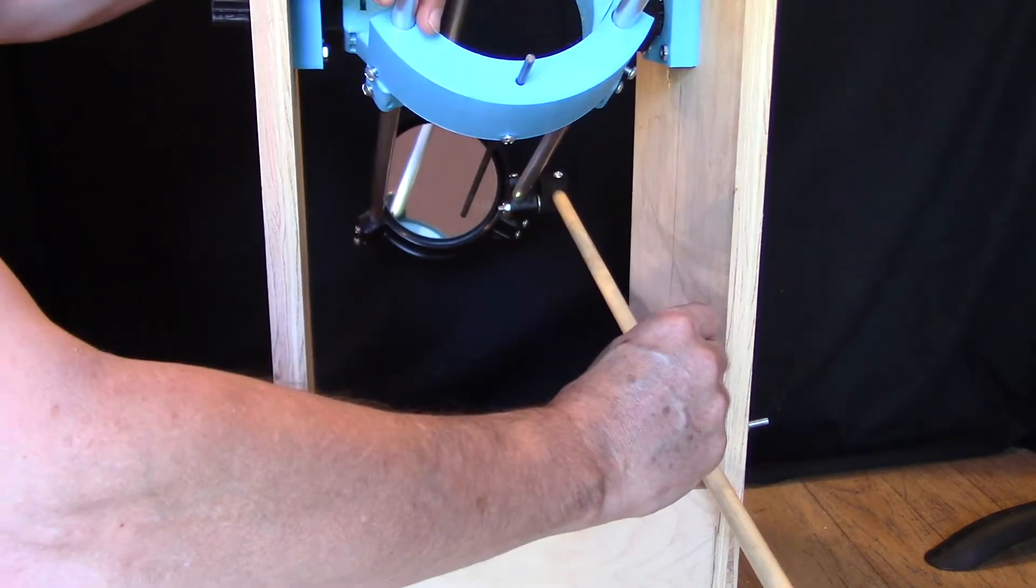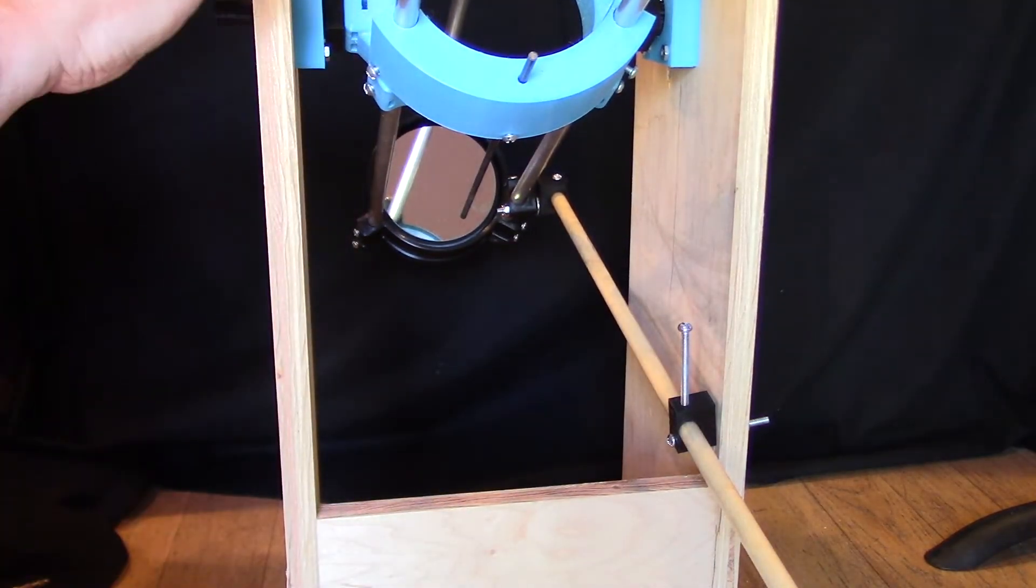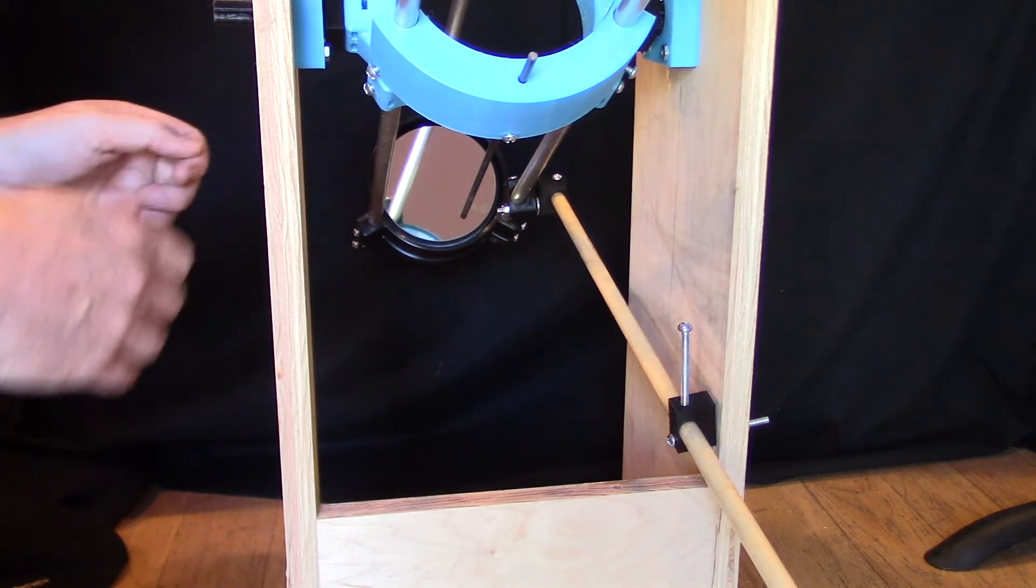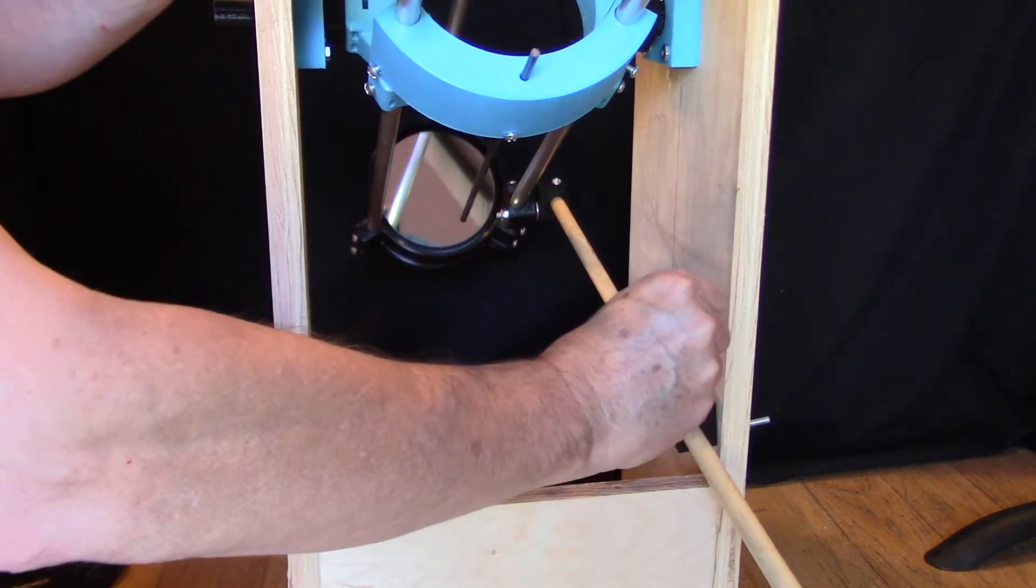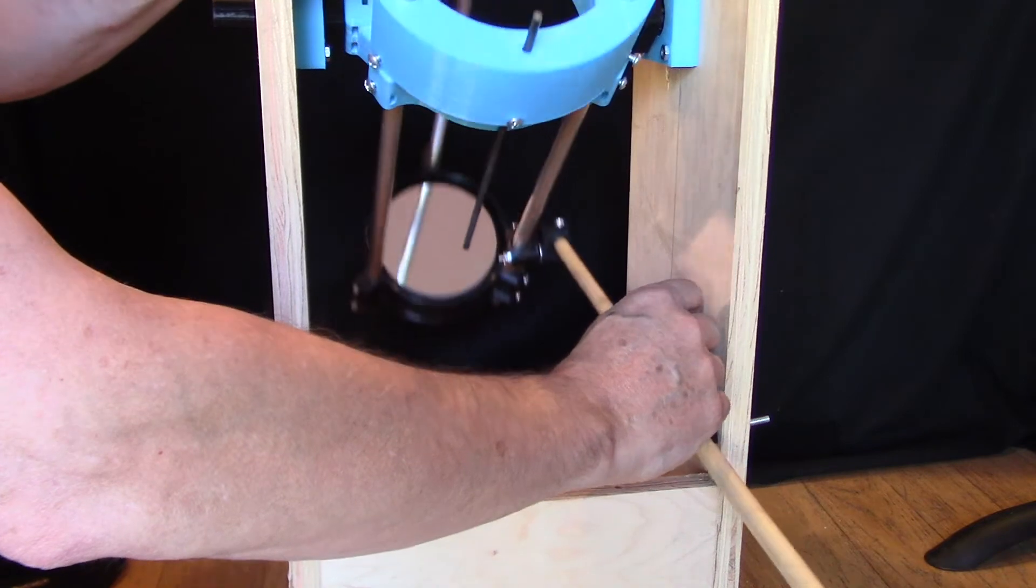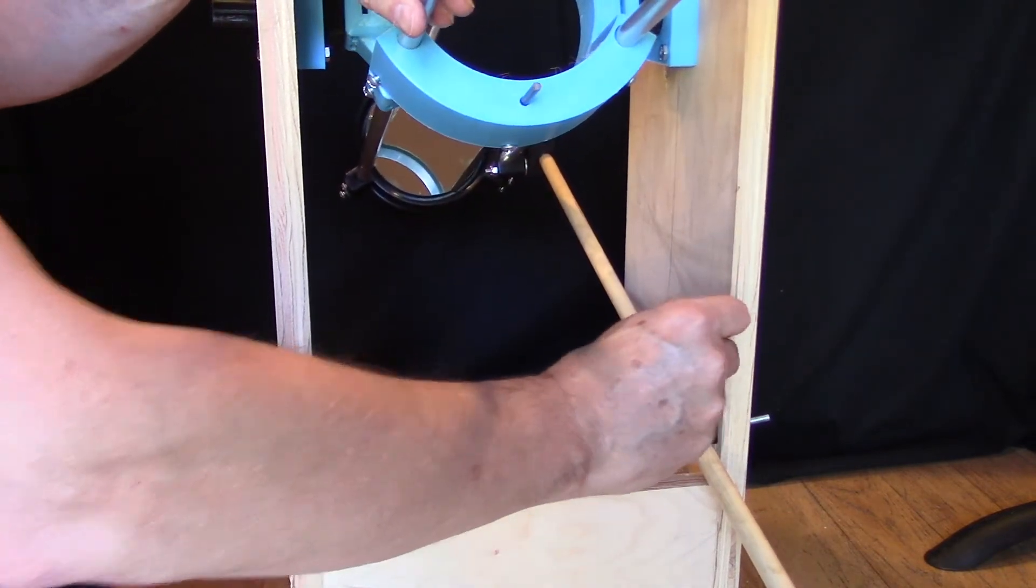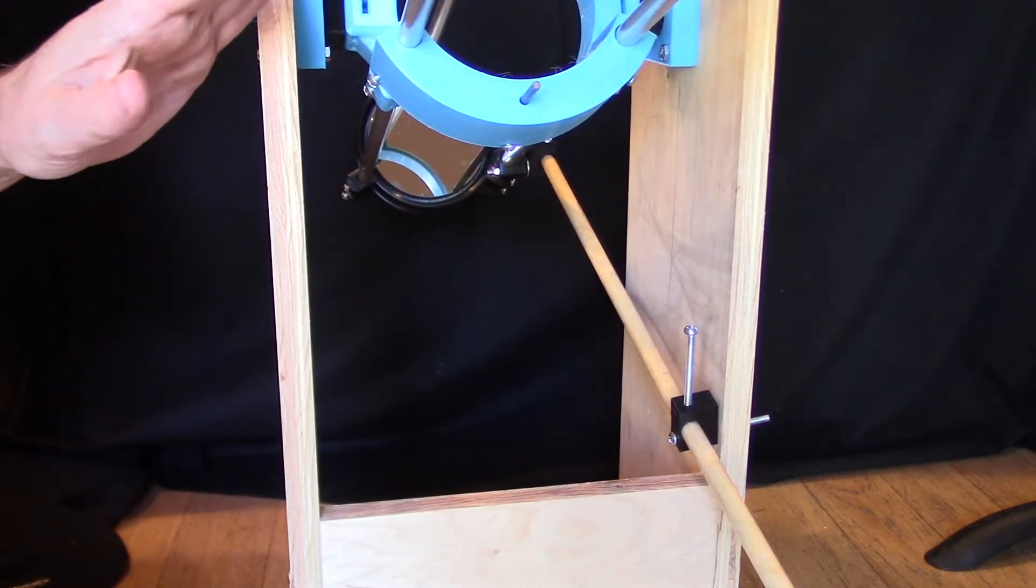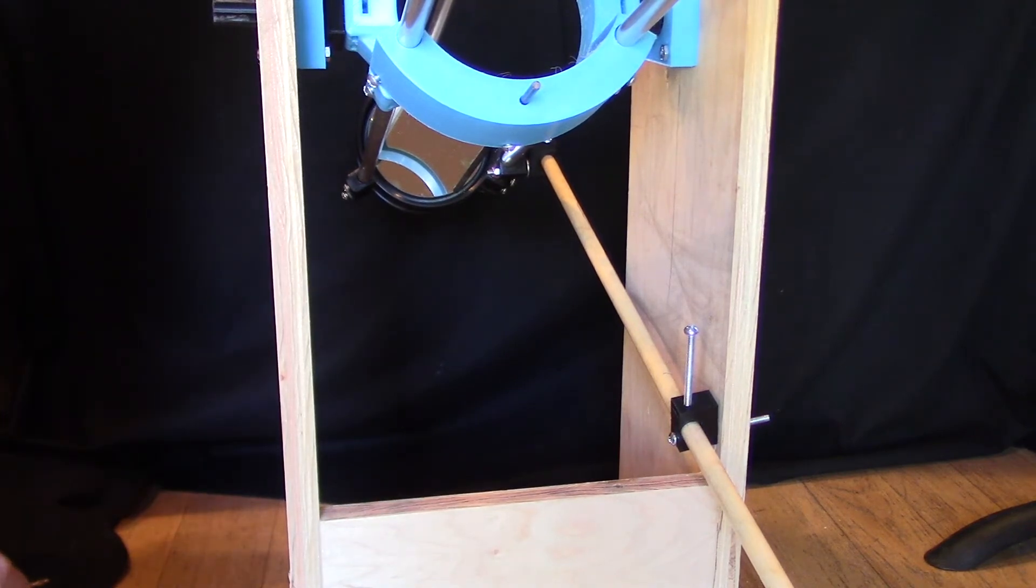And now I have a way of holding this without a lot of friction and grabbing and whatnot from those other Z bearings. So this is really, really smooth. And I think that's going to make this a lot easier. So let's take this out and give it a try.